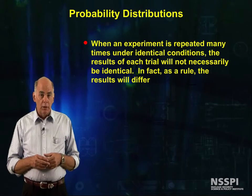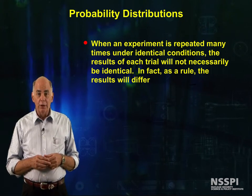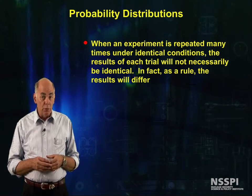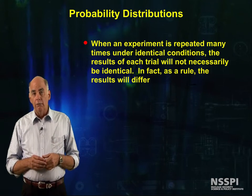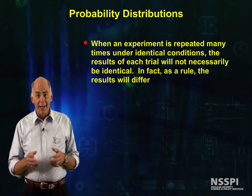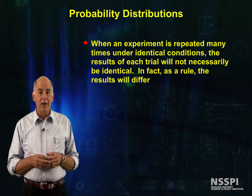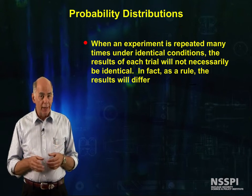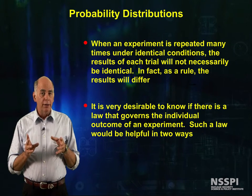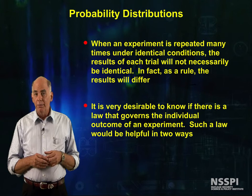To summarize, when an experiment is repeated many times under identical conditions, the results of each trial will not necessarily be identical. In fact, as a rule, the results will differ. For example, if a fair coin is tossed 100 times, the number of times heads appear will vary. If careful measurements of the speed of light are repeated, the results will differ slightly. It is very desirable to know if there is a law that governs the individual outcomes of an experiment. Such a law would be useful in two ways.